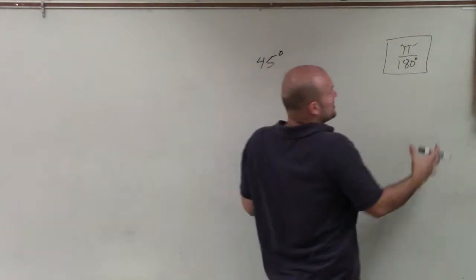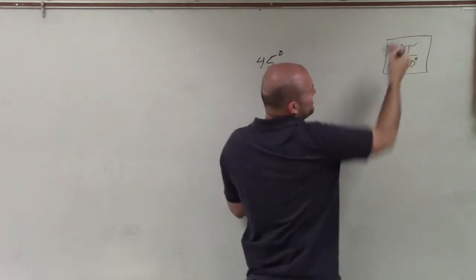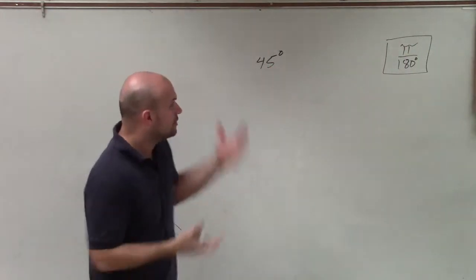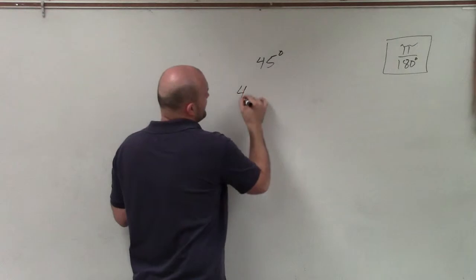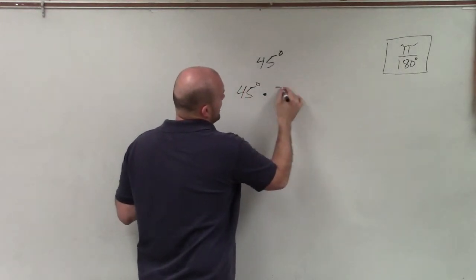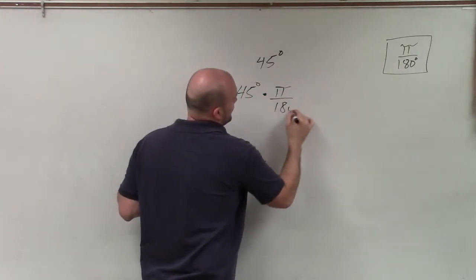And our holy grail for conversions from degrees to radians is going to be pi over 180. So all I'm simply going to do is take 45 degrees and multiply it by pi over 180 degrees.